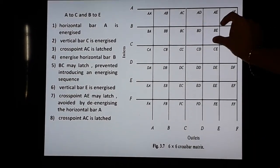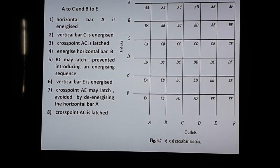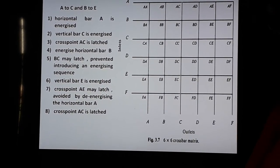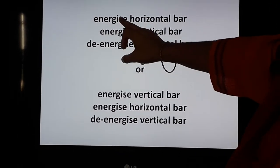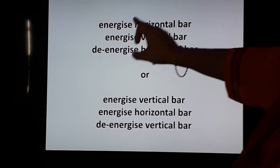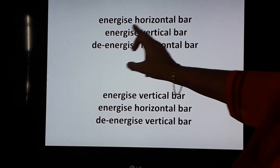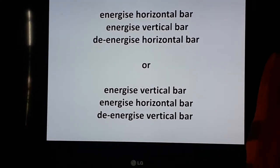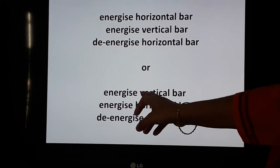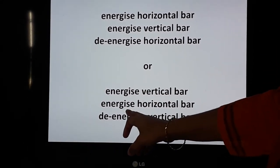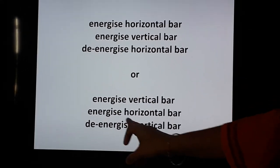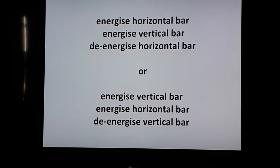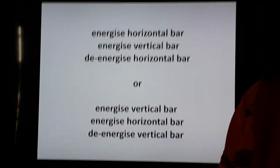So the various steps which need to be followed are: first energize the horizontal bar, then energize the vertical bar, then de-energize the horizontal bar. The sequence can be reversed also — that is, energize the vertical bar, energize the horizontal bar, then de-energize the vertical bar. In this way the 6 by 6 crossbar matrix works. Thank you.